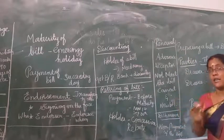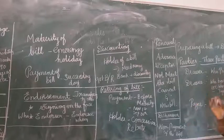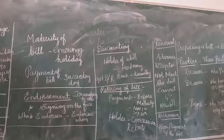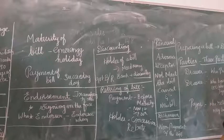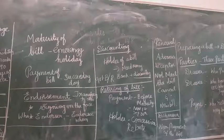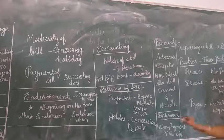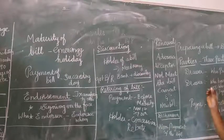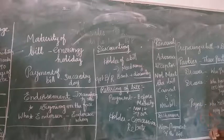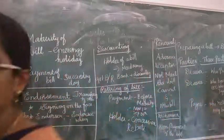If the holder of the bill presents it for payment on the due date and the drawee does not pay — for example, on December 2nd the amount is not paid to Jyothi Kumar — that is called dishonor of the bill. Now let us move on to the bills receivable book, bills payable book, how to calculate bills receivable and bills payable, and what is journal proper — we will see all of this in the next video. This is all about bills of exchange.